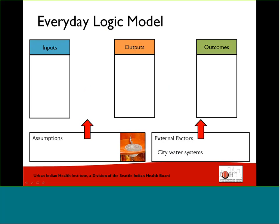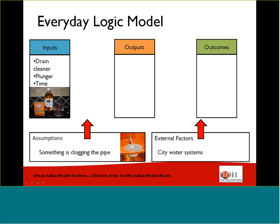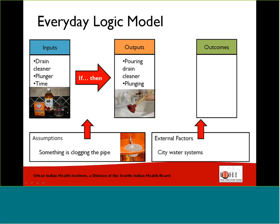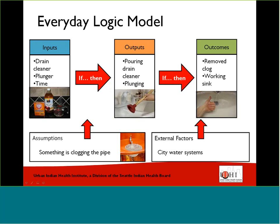We're going to do an example of how a logic model can be applied to an everyday situation or common problem. Our example is that we have a backed-up sink. An assumption about this problem is that something is clogging the pipe. So if I had some drain cleaner, a plunger, and a little bit of time, those would be the resources I have to address this problem. If I have these inputs or resources, then I can pour the drain cleaner and use the plunger. If I perform these activities or outputs, then hopefully the clog will be removed and I will have the return of my working sink.